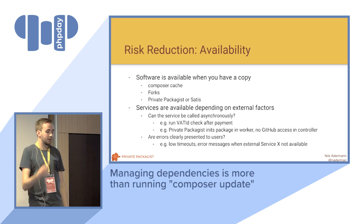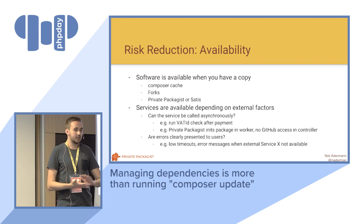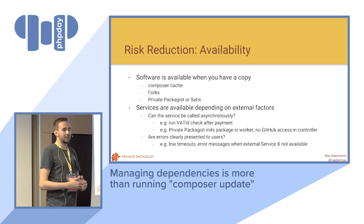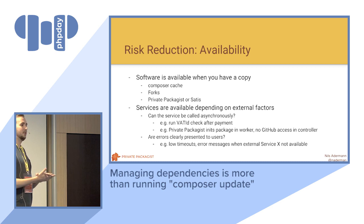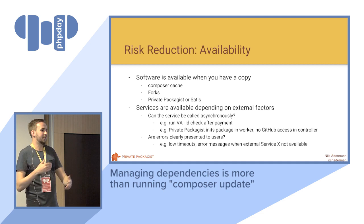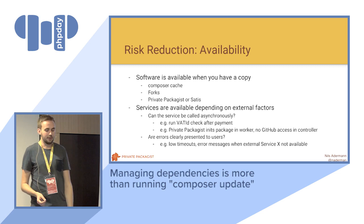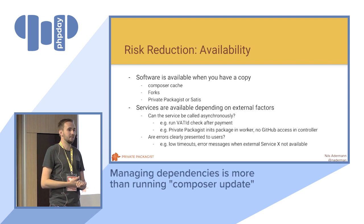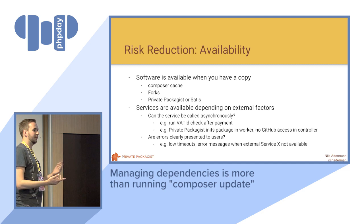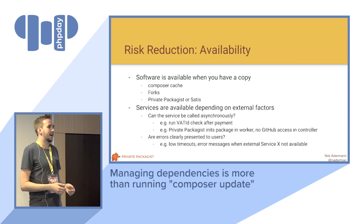So how do we reduce these types of risks? With software, it's pretty straightforward — when you have a copy of the software, it's available to you and nobody can take it away. Using Composer, there are a few ways of doing that. First, you have the Composer cache, which usually keeps a copy of whatever you've previously installed, so worst case you can recover from there. But it's not very reliable because you might be clearing your cache or running in a build system without a local copy. There are people with strategies that simply fork every single open source dependency they have. While that avoids availability issues, it adds a whole other set of problems around updating those forks.